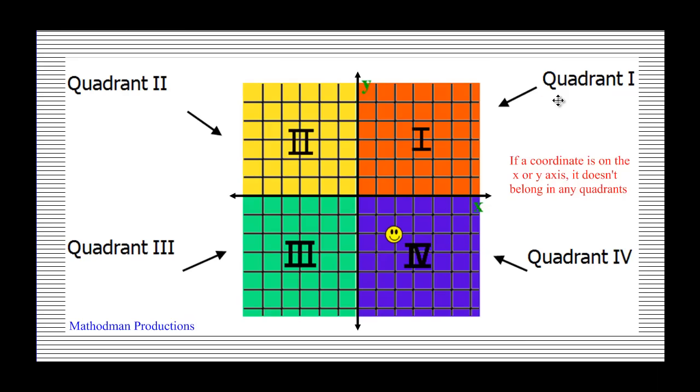Here's a little tricky part about labeling quadrants. If a coordinate is on the x or y axis, meaning if it's on this x-axis or it's on this y-axis, it doesn't belong in any quadrant. Even if it's on the origin, that doesn't belong in any quadrant. You can't just say it's between two and three, so it's in quadrant two and a half. That doesn't exist, so just remember this one thing. I'm going to say it again. If a coordinate is on the x or y axis, it does not belong in any quadrant.